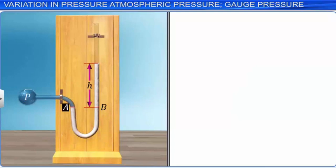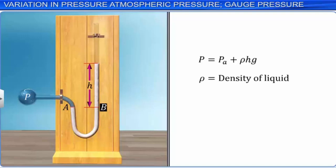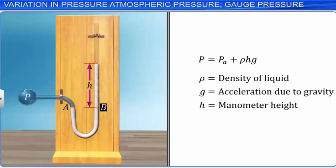The gauge pressure P − P_A is equal to ρHg. Gas is not used in a manometer because for a given change in pressure, the variation in density of a liquid is negligible, whereas the density of a gas varies greatly. This makes liquids largely incompressible, which is why only liquids are used to measure pressure in a manometer.